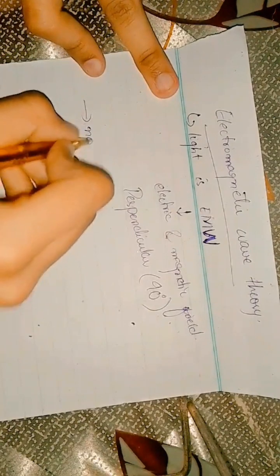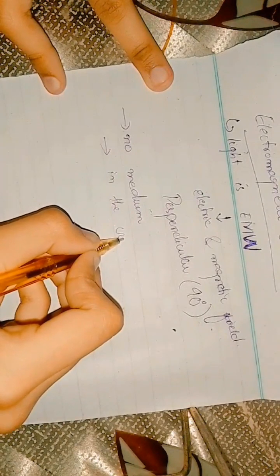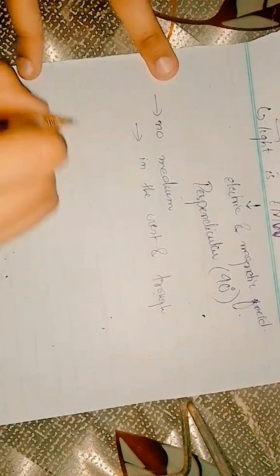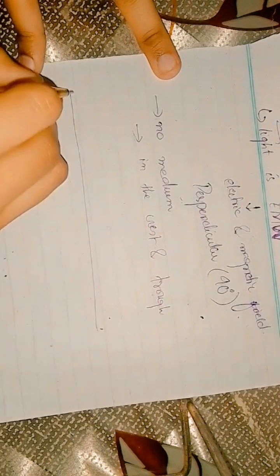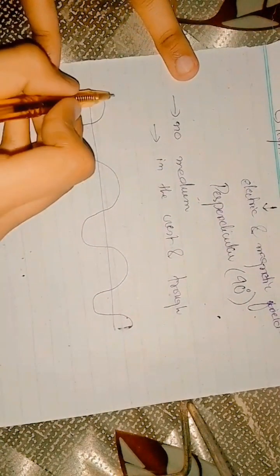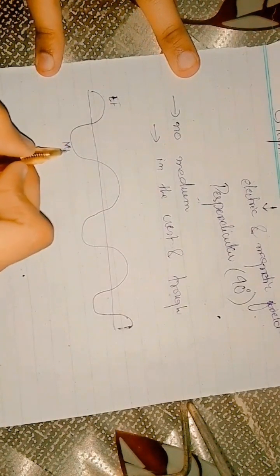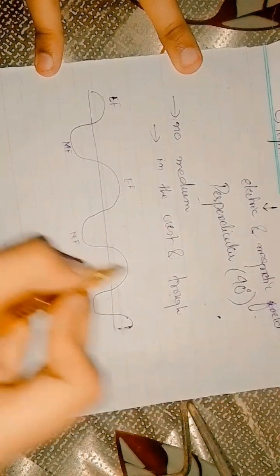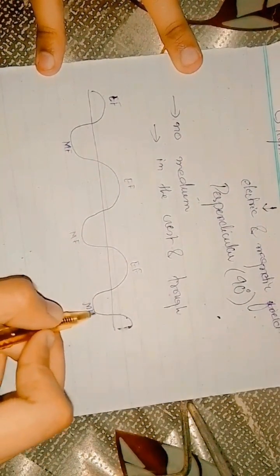No medium is required here. The light will travel in the form of crest and trough. For example, this is a wave — this part carries the electric field, this carries the magnetic field, then again electric field, then magnetic field, then electric field, then magnetic field, alternating as the wave propagates.